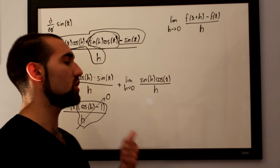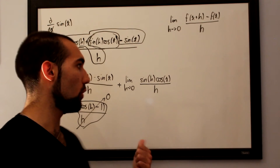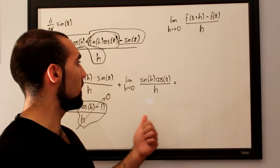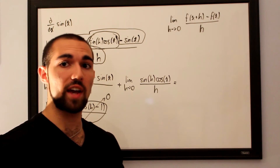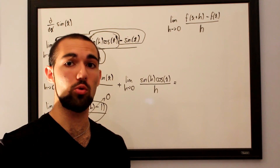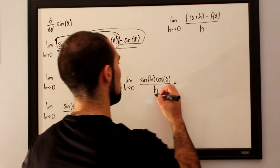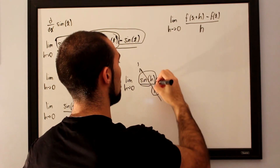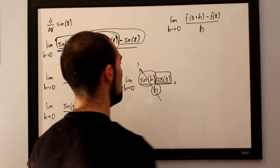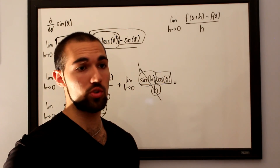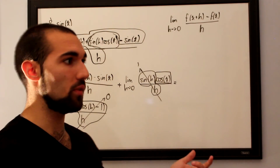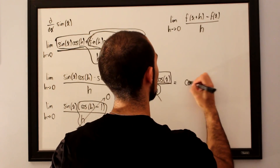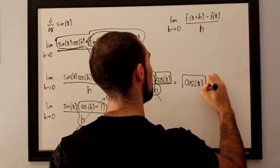All we're left with is the limit as h approaches 0 of sine of h cosine of x over h. This is another limit from those videos, where sine of x over x as x approaches 0 goes straight to 1. The same thing happens here — sine of h over h goes to 1 — and all we're left with is cosine of x. This proves that d/dx of sine of x is simply cosine of x.